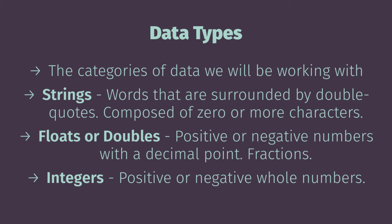The next category are called floats or doubles. For the purpose of this course, both of these categories of data are going to be considered the same, although there is a real difference — one has a higher level of accuracy than the other. Essentially, what I mean is any positive or negative number with a decimal point — any fractional number. Finally, integers: these are positive or negative whole numbers — any number that does not have a fractional component.